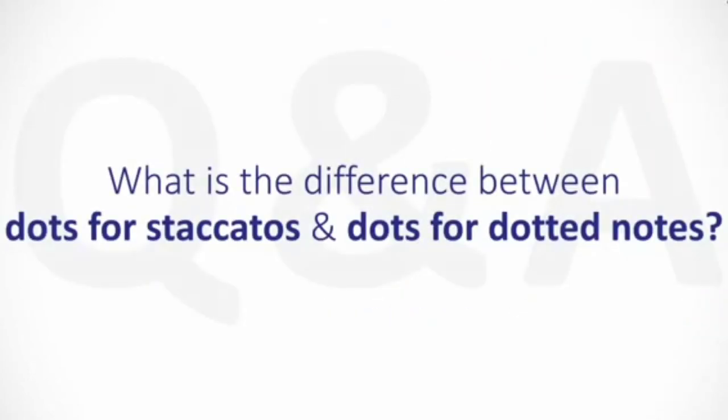What is the difference between dots for staccatos and dots for dotted notes? I'll start by defining these two things, and then I'll compare and contrast them.